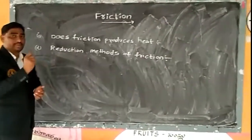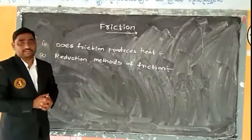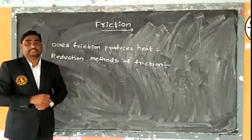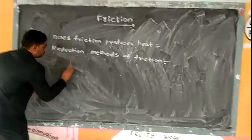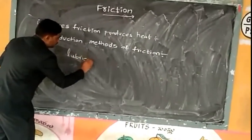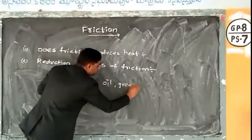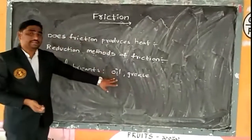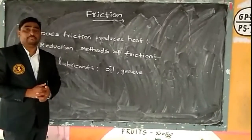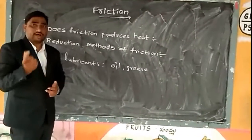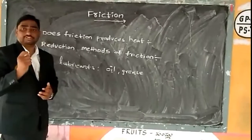What does lubrication mean? In automobiles or machines, inside the machines there are moving inner parts. Lubricants like oil and grease are being applied in between the surfaces of the moving inner parts of machines. Once we apply them in between the moving parts, a thin layer is going to be formed.